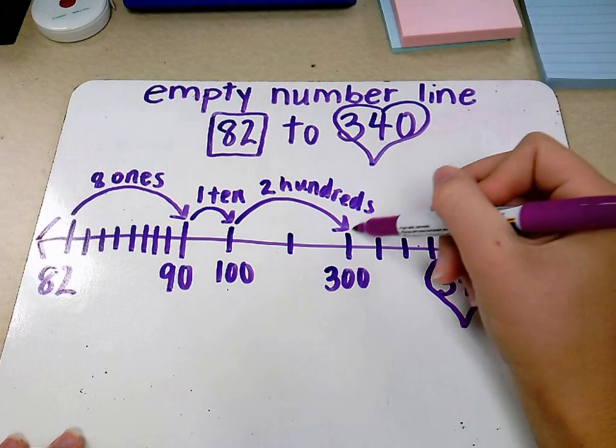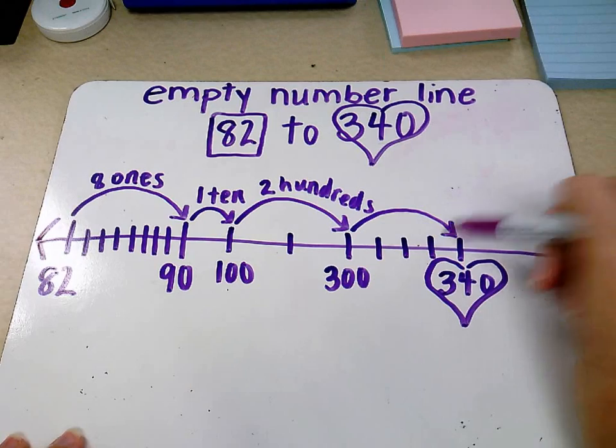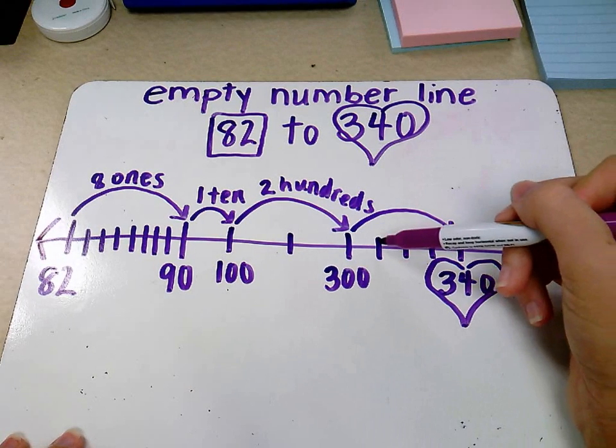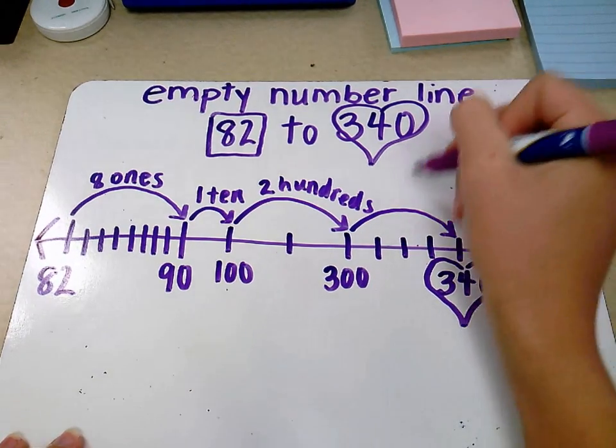340, but I'm not done. I need to label what I did. I counted by tens, but how many? One, two, three, four tens.